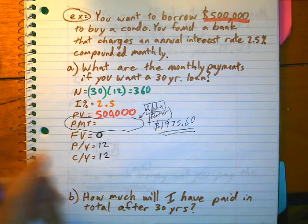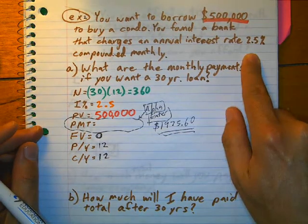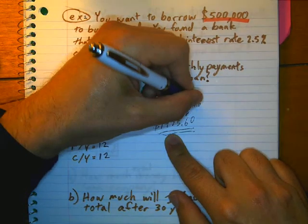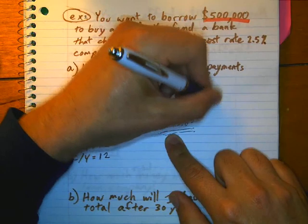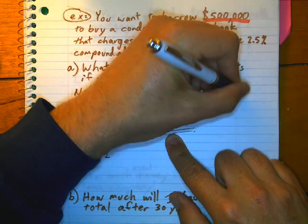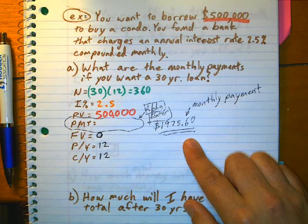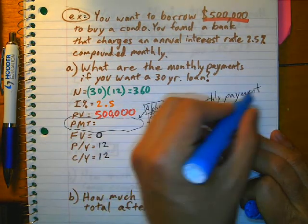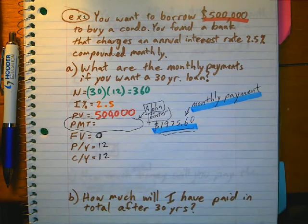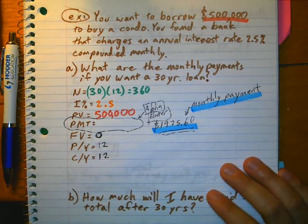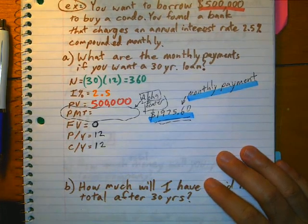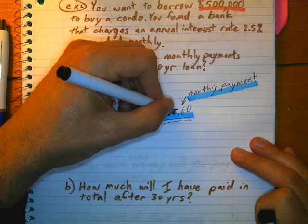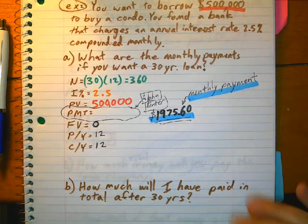and my monthly payments are going to be $1,975.60. So, at this percent interest, my monthly payment for a condo that's half a million dollars is a little under $2,000. That seems reasonable.